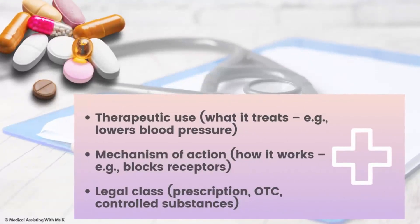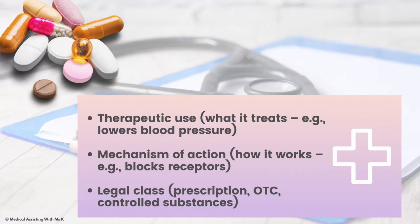We did go over this in the last lesson, but I want to reiterate: therapeutic use is what a medication treats. For example, it lowers blood pressure, or the use may be hypertension. The action is what it does in the body — the mechanism of action. So for hypertension, the mechanism of action may be relaxing blood vessels. Legal class refers to whether it's a prescription, over-the-counter, or a controlled substance.